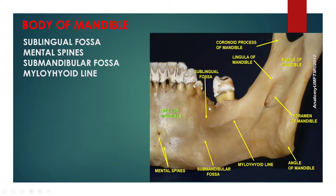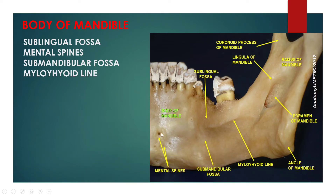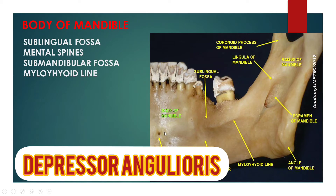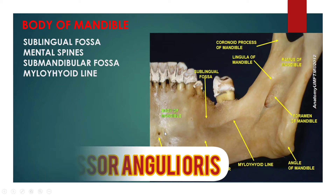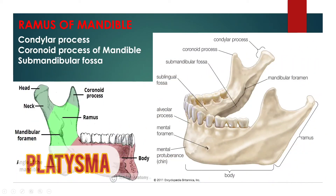Running backward and upward from each mental tubercle is a faint ridge called the oblique line, which continues with the anterior border of the ramus. It affords attachment to the depressor labii inferioris and depressor anguli oris. The platysma is attached below it.